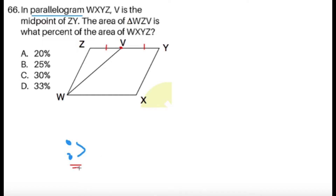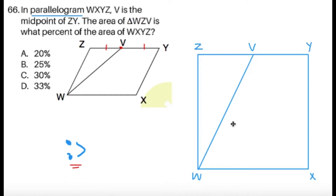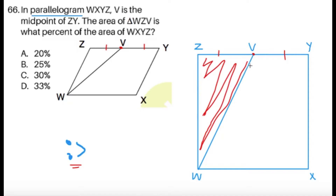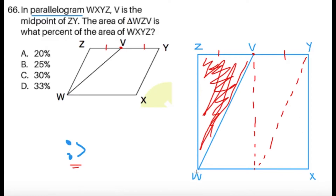Just like how we can substitute specific values for a variable, if we have a parallelogram given, why not simplify the question by assuming it is a square? A square is indeed a parallelogram, and the condition that V is the midpoint of ZY still holds. With this figure, it might be easier now. Drawing a dashed line through the middle, the area of triangle WZV is exactly one-fourth of the entire square — technically one-fourth of the parallelogram.